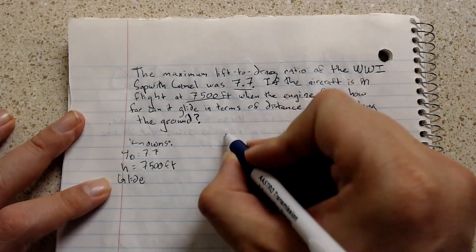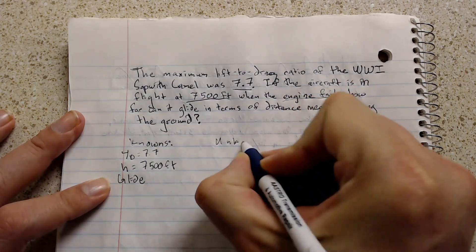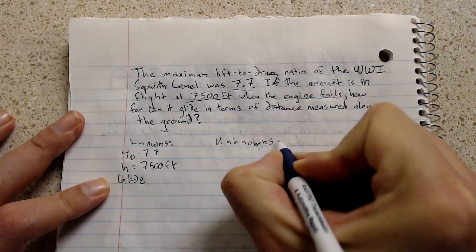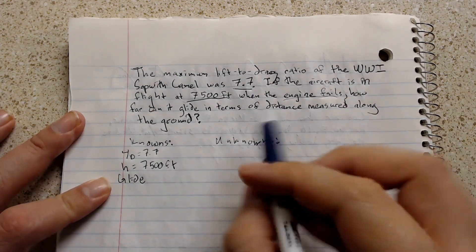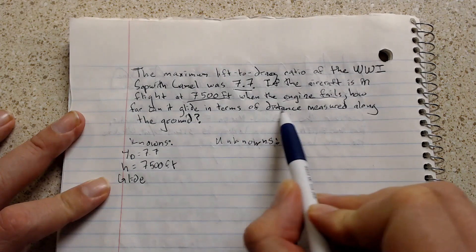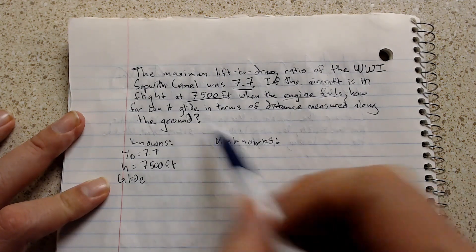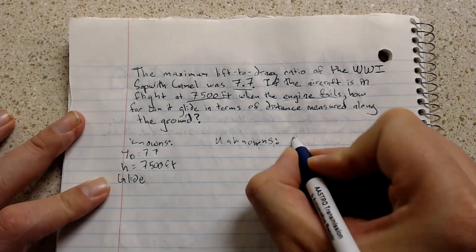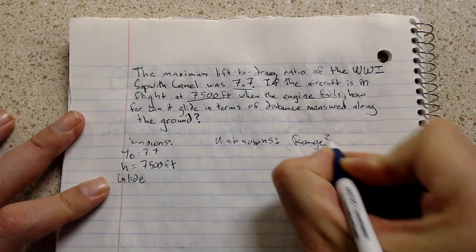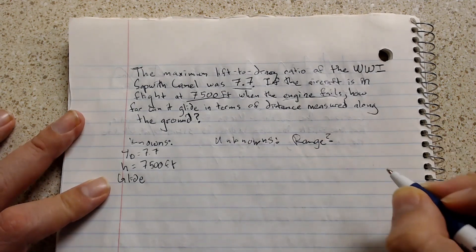And what are our unknowns? Our unknown would be the distance measured along the ground that it can go. We call this range. What is the aircraft's range?